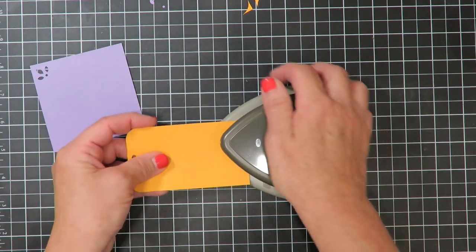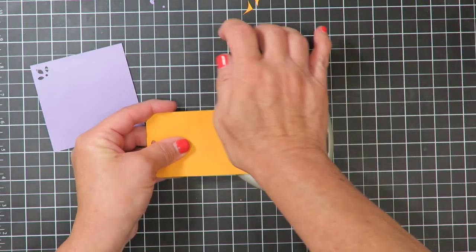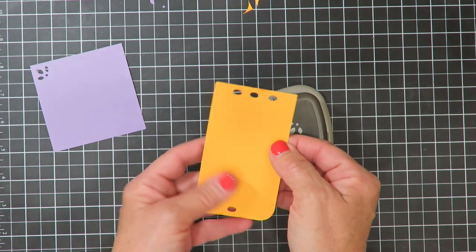But you know what else you can do? Go ahead and stick it inside your punch. And if you wanted to, you can just move it along the border. And look, you can make a little decorative edge. Isn't that cute?